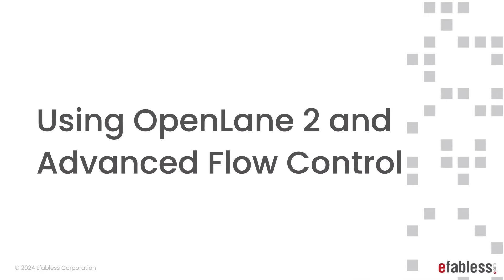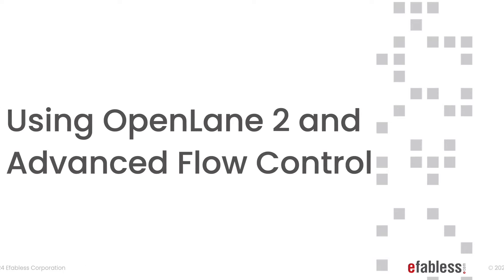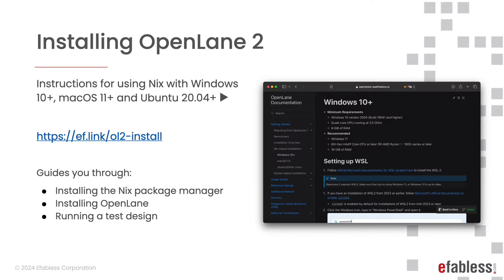For all other purposes, using OpenLane 2. Installing OpenLane 2 is simple — for Windows, Mac, and Linux, follow the provided link. It guides you through installing the package manager, OpenLane, and running a test design. We do require the Windows Subsystem for Linux to be used at this stage; we apologize for the inconvenience.